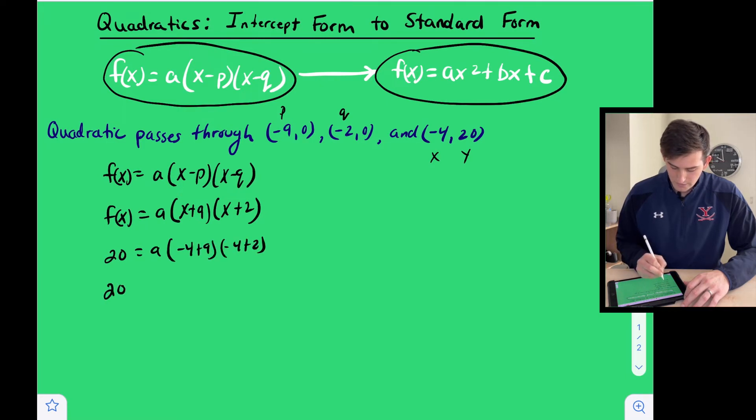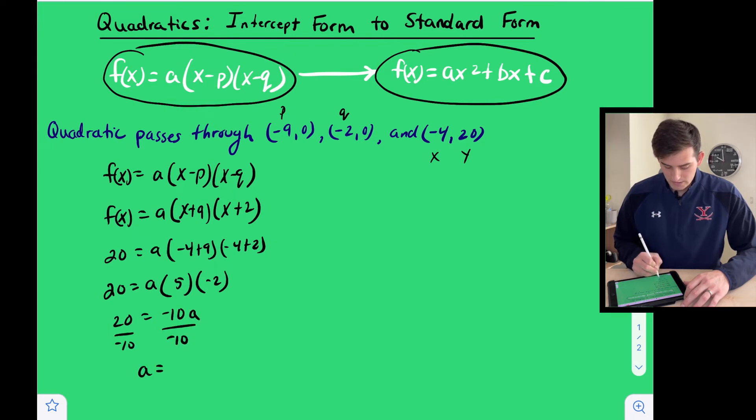So we're going to simplify here: 20 equals a times negative four plus nine would be five, and negative four plus two is negative two. So 20 equals five times negative two would be negative 10, so negative 10 a. And now we can divide by negative 10, and we get that a is equal to negative two.